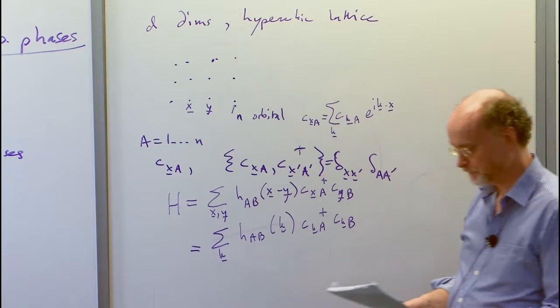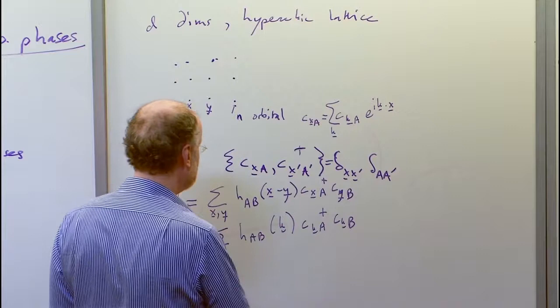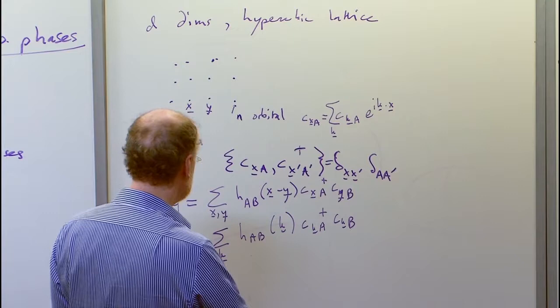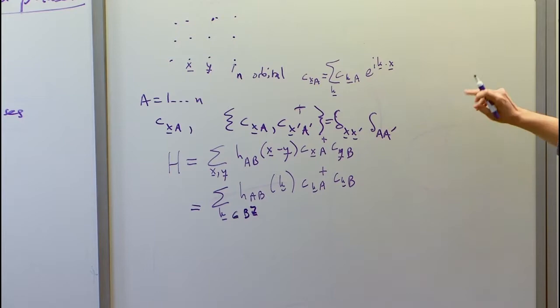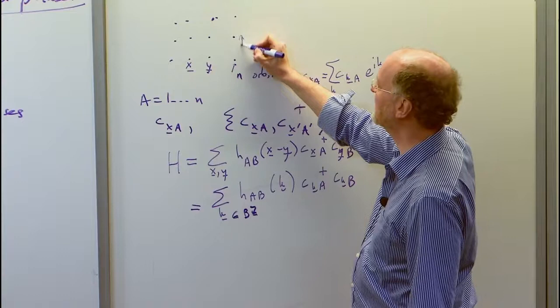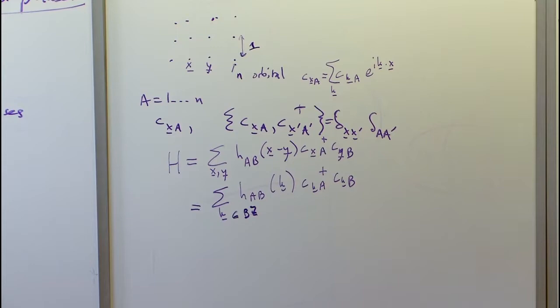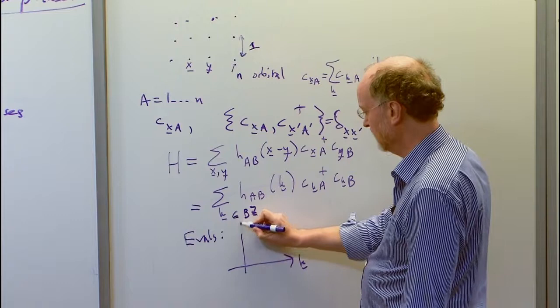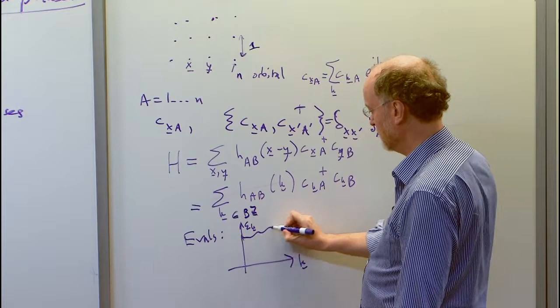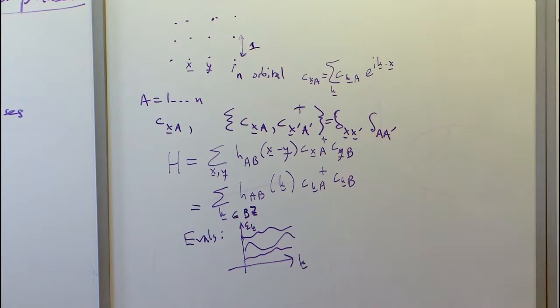Once we have this, the problem is to diagonalize the matrix H_{ab}(k) for each k, and we get some band structure. K lives in the Brillouin zone, which is a torus — k running from −π to π. I think of the lattice spacing as one. Finding the eigenvalues, I can plot them as a function of k, getting curves epsilon(k). This is why they're called bands.